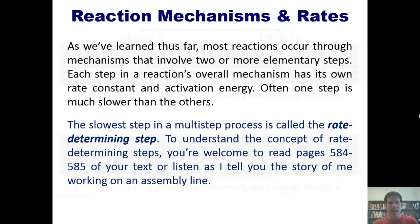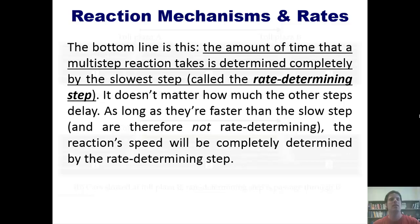The same thing occurs with a chemical reaction where you've got multiple reaction steps. Whichever step is the slowest step, the overall speed of the entire process is equal to the speed of that step, i.e. the rate-determining step. So here's the bottom line. The amount of time that a multi-step reaction takes is determined completely by its slowest step, or rate-determining step. It doesn't matter how much time the other steps take, as long as they're faster than the slowest step and are therefore not rate-determining, the reaction's overall speed will be completely determined and equal to that of the rate-determining step.